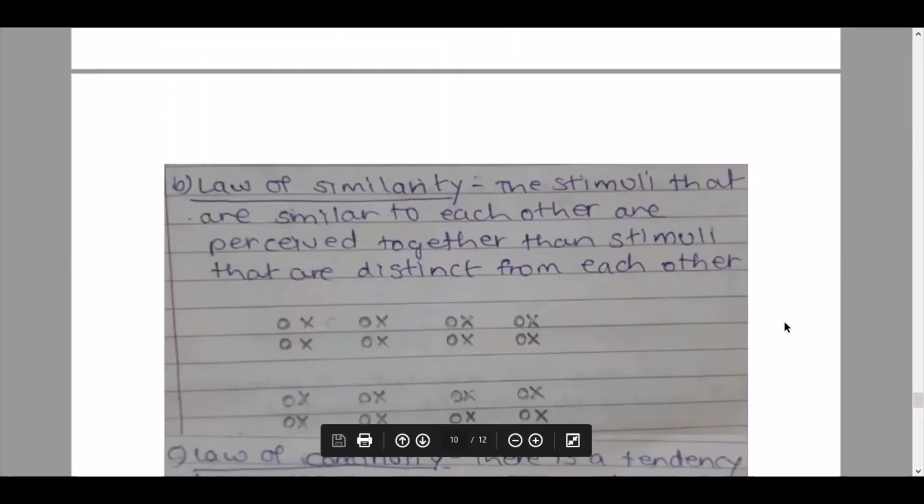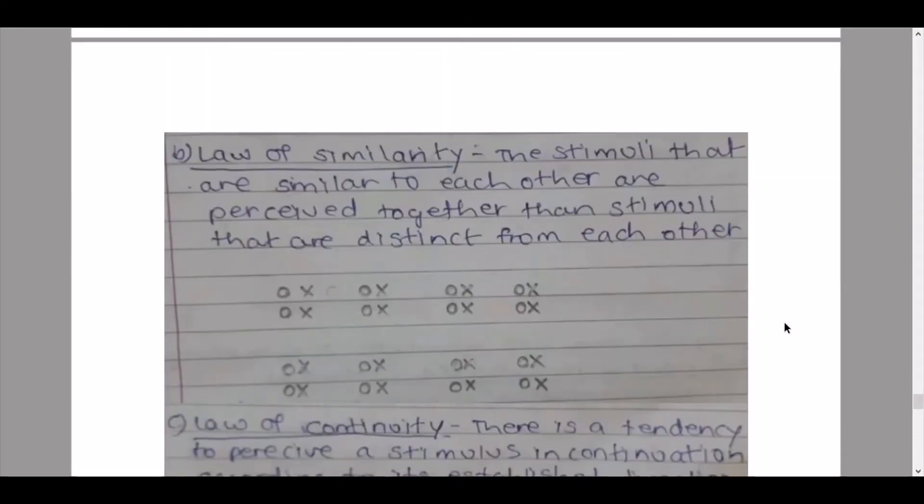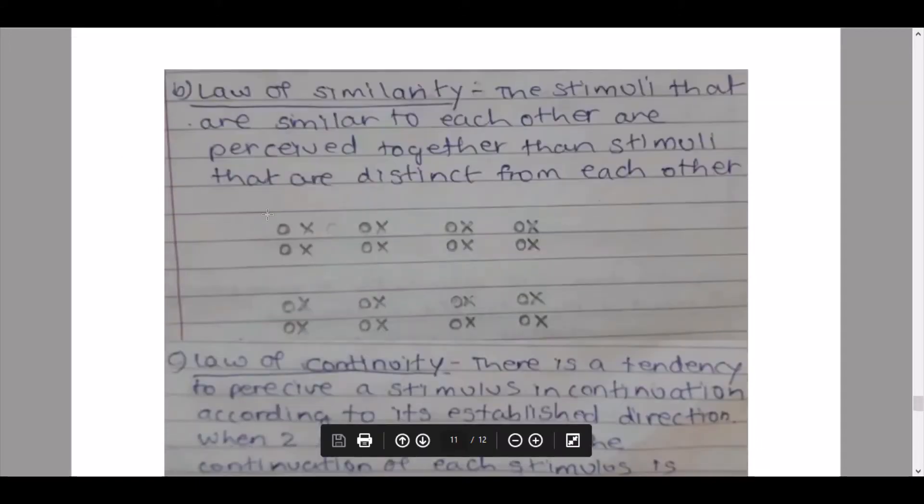Then we continue to our next law: the law of similarity. The stimuli that are similar to each other are perceived together than stimuli that are distinct from each other. So this is the example given in the textbook as well.